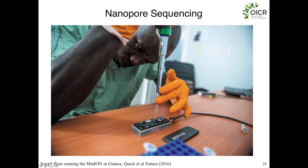The MinION has a flow cell — this black object attached to the base station. Joseph is pipetting the sample in here, and it gets drawn through the array of nanopores. Using this in Africa, we were able to sequence Ebola genomes with a much quicker turnaround — on the order of a few days rather than a few weeks or months if you're shipping the samples to Europe or North America for sequencing.